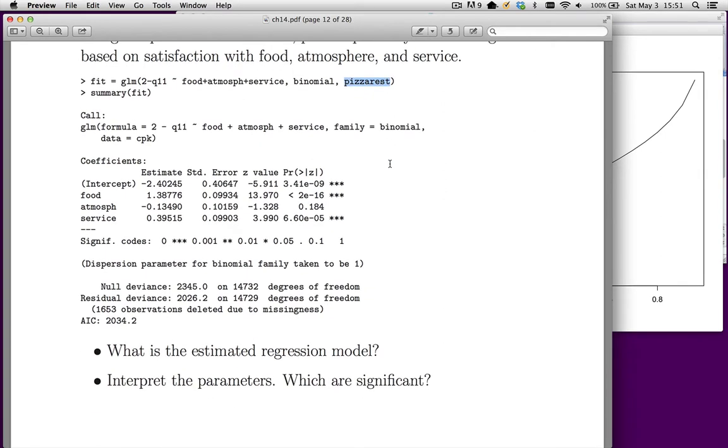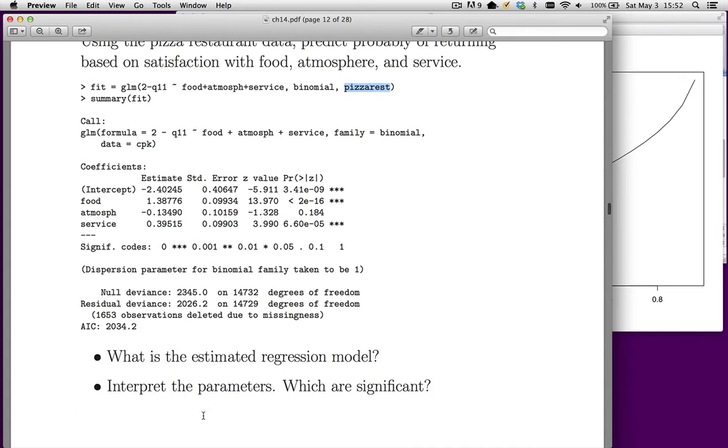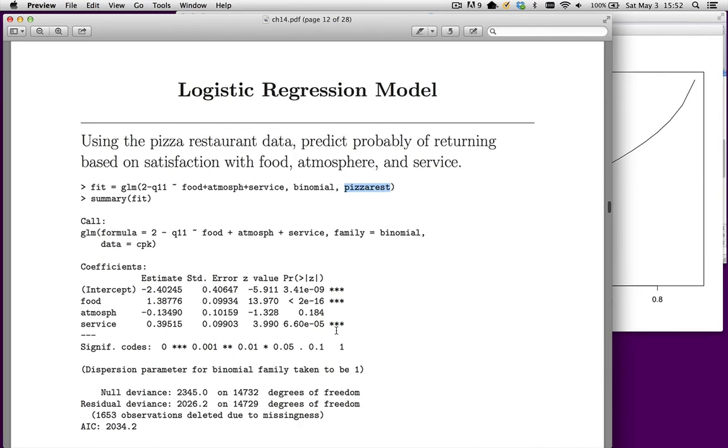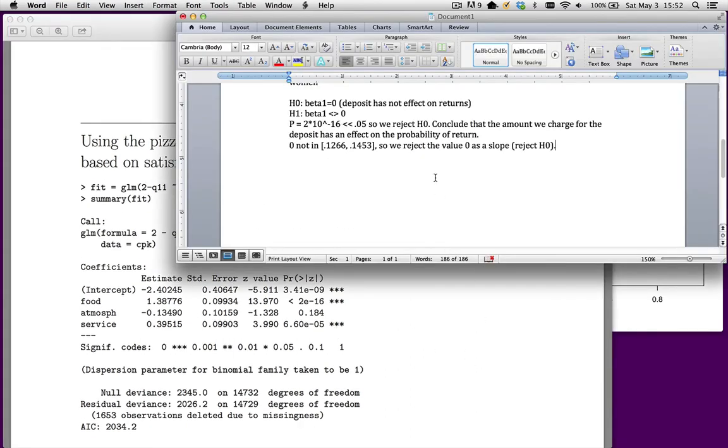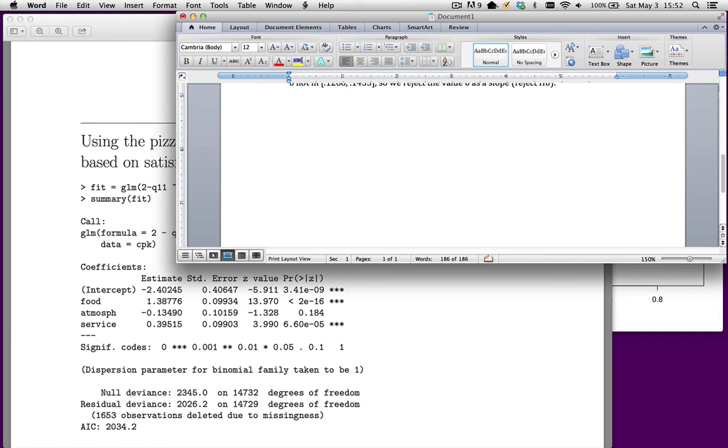Here's the summary of this object. First, we should state the estimated regression equation. We need to interpret the parameters. Which ones are significant? Let's go back to Word where I can easily type these things in.